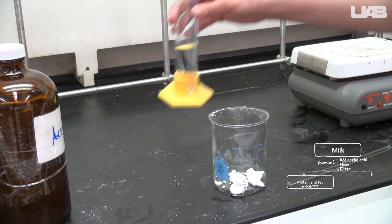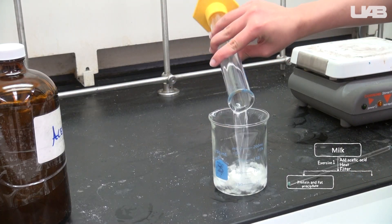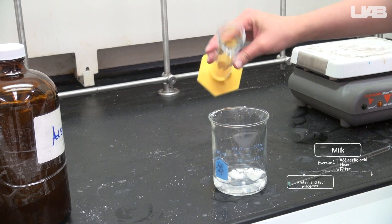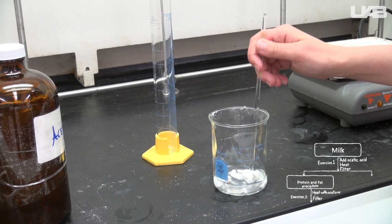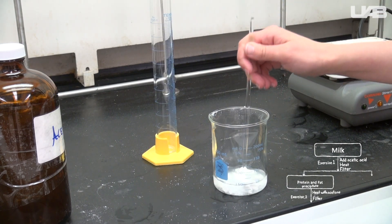The exercise two group should head to the hood and add about 35 milliliters of acetone. Break up the chunks as much as possible to expose more surface area to the solvent.